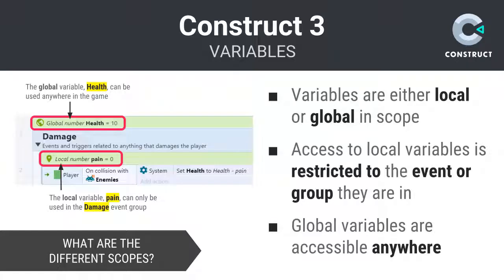To clarify the difference, let's take a look at an example. This example features both a global and local variable named health and pain, respectively. Health is global and can be accessed anywhere in the project, including other event sheets. Pain can only be accessed from within the damaged event group that it is defined in. The health of our player is important information that should be shared far and wide, while pain is simply used in a calculation — its value really isn't of any importance beyond its current block.